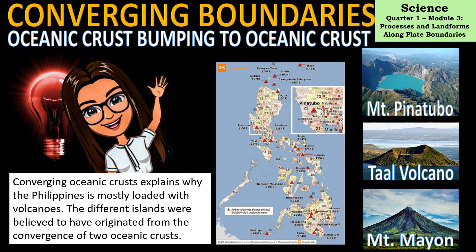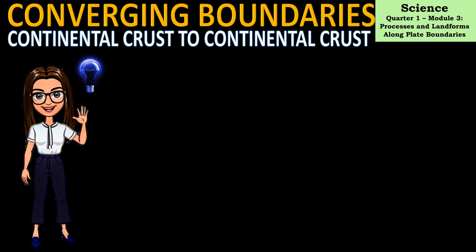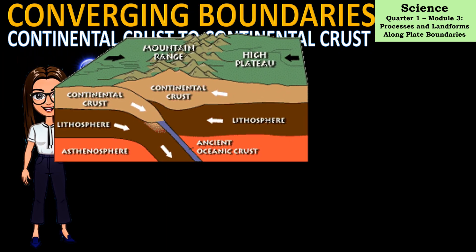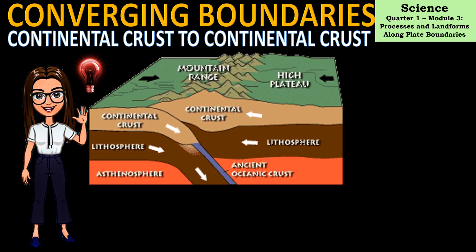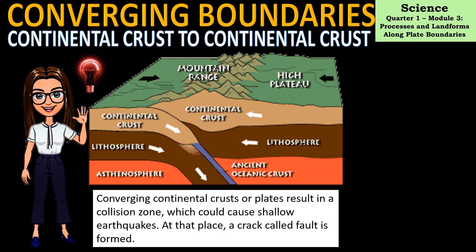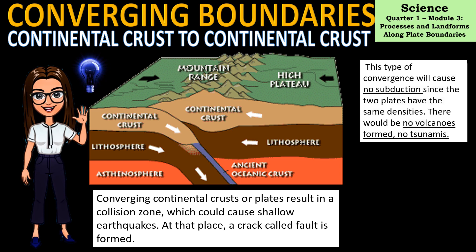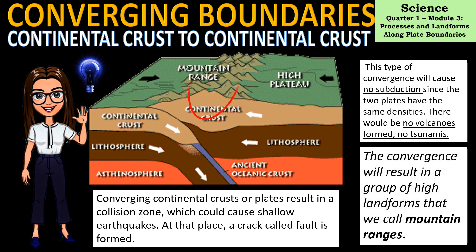Converging oceanic crusts explains why the Philippines is mostly loaded with volcanoes — the different islands are believed to have originated from the convergence of two oceanic crusts. The last type of convergent boundary happens when two continental crusts collide. This results in a collision zone causing shallow earthquakes, and a crack called a fault is formed. Since both plates have the same density, there is no subduction, no volcanoes, and no tsunamis — the convergence instead results in high landforms we call mountain ranges.